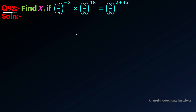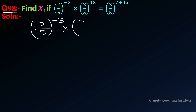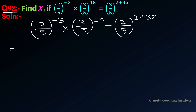Question number 92: Find x if (2/5) to the power minus 3, into (2/5) to the power 15, equals (2/5) to the power 2 plus 3x. Solution: (2/5) to the power minus 3 into (2/5) to the power 15 equals (2/5) to the power 2 plus 3x.